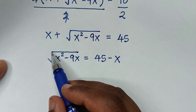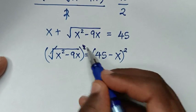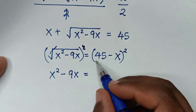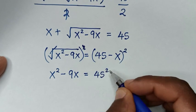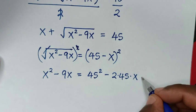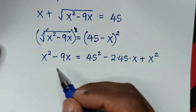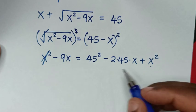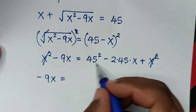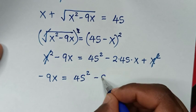To remove the square root, we square both sides. The square root cancels the square on the left, giving x²−9x. The right side (45−x)² expands to 45² minus 2 times 45 times x plus x², which is 45² − 90x + x².